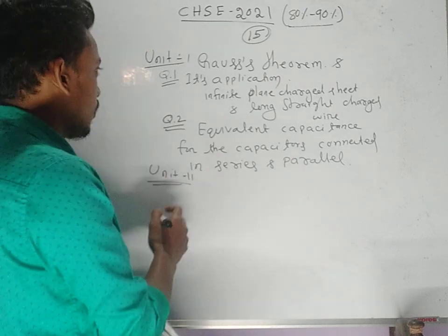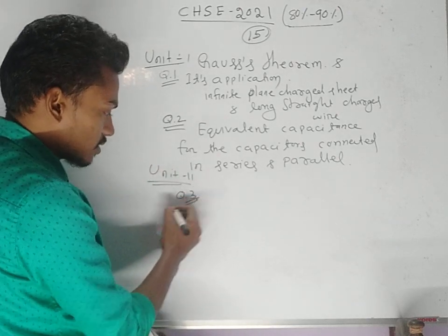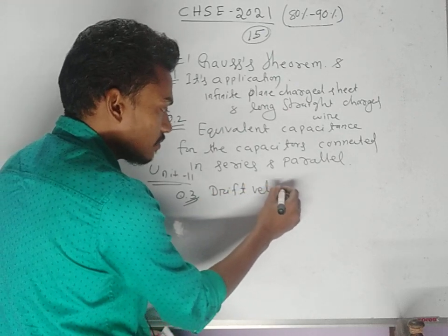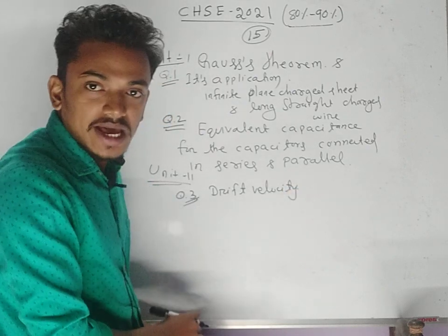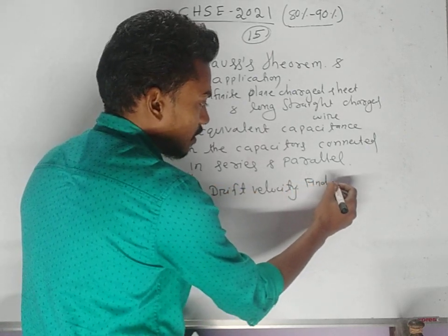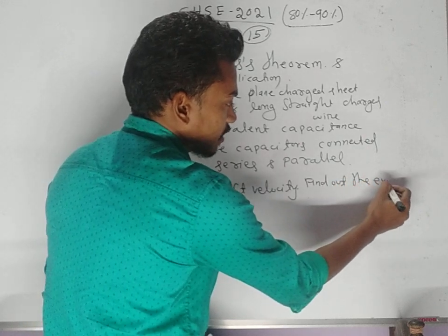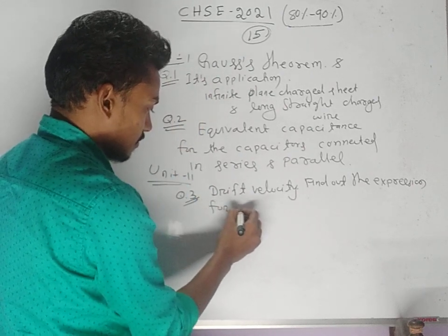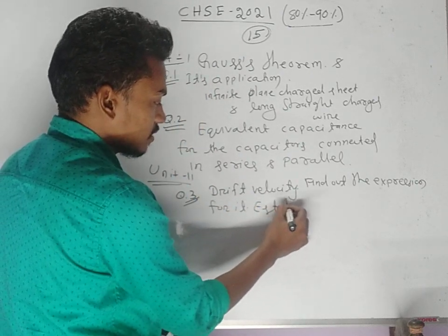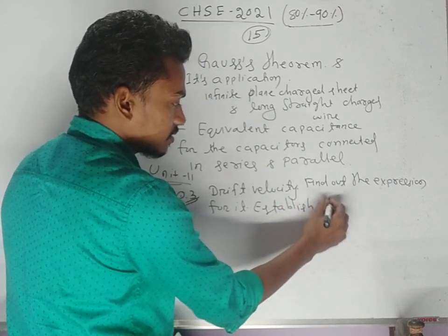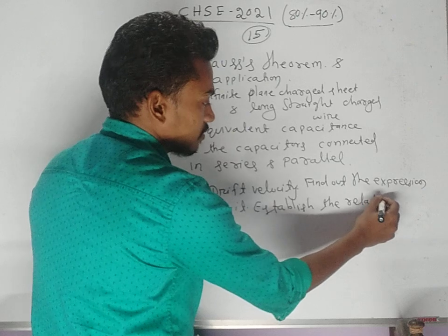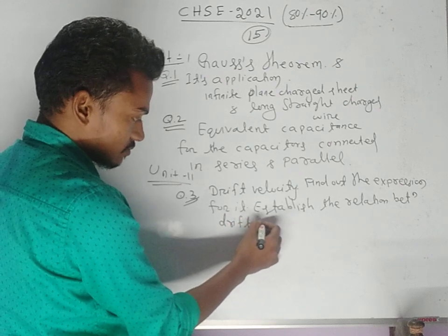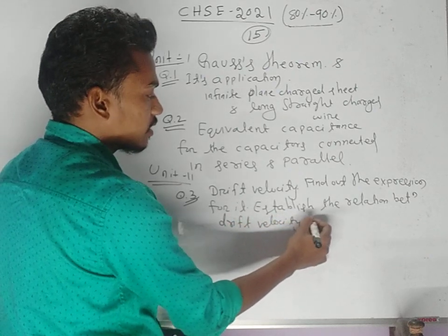An important long question from current electricity: define drift velocity, find out the expression for drift velocity, and establish the relation between drift velocity and current.